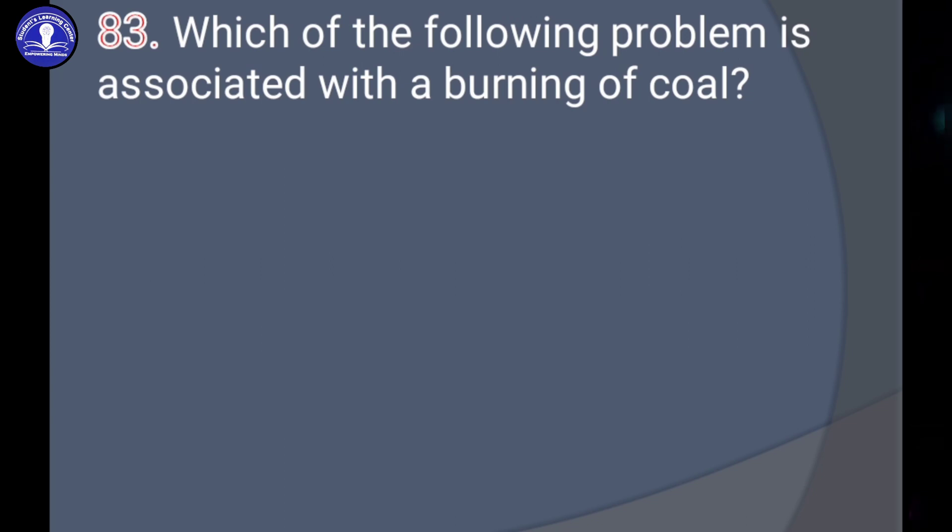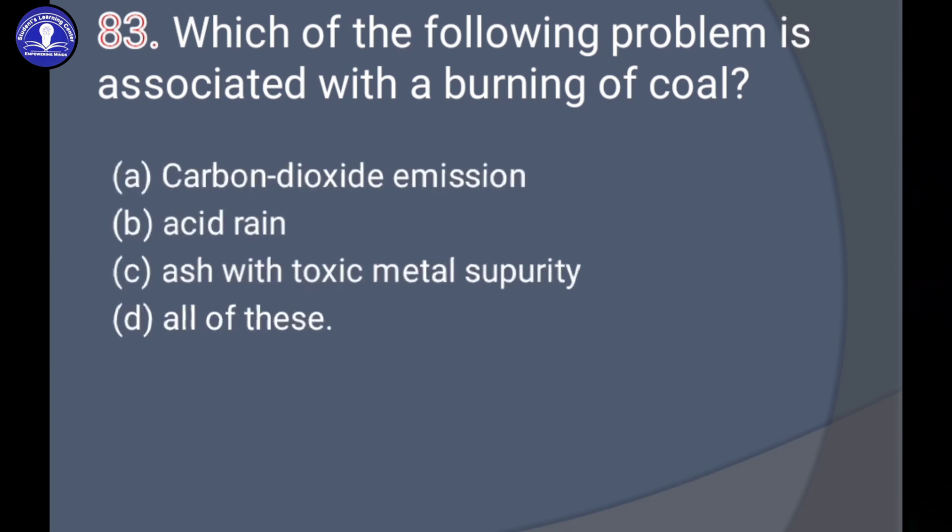Next question: Which of the following problems is associated with the burning of coal? Carbon dioxide emission, acid rain, ash with toxic metal impurity, or all of these. Please go to our first session video and watch it. The answer is all of these.